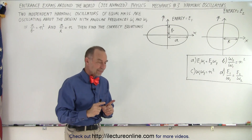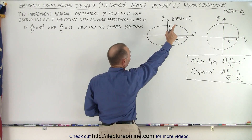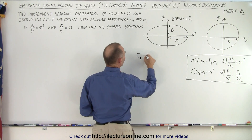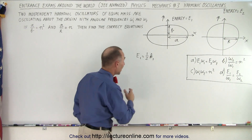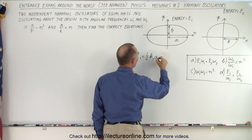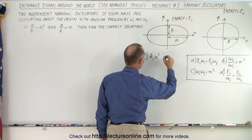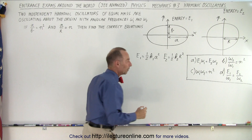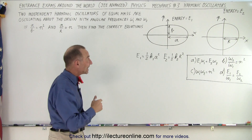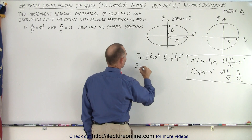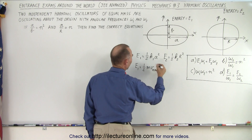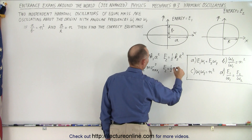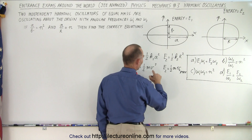With harmonic oscillators, the total energy E1 of the first system equals ½k₁a², where k₁ is its spring constant and a is the maximum displacement. Similarly, E2 equals ½k₂r². We can also express the maximum energy in terms of kinetic energy: E1 equals ½m·v₁_max² and E2 equals ½m·v₂_max².